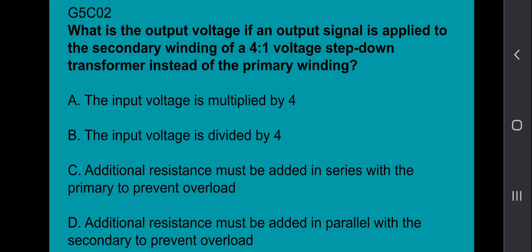G5C02: What is the output voltage if an output signal is applied to a secondary winding of a 4-to-1 voltage step-down transformer instead of a primary winding? The input voltage is multiplied by 4.